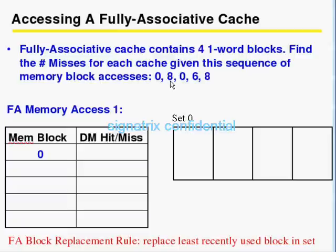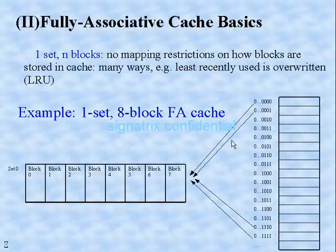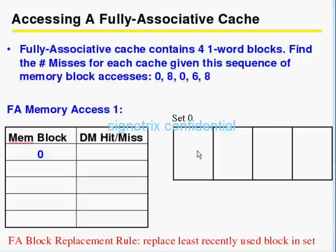Let's start with the first access. You have to remember this diagram. The CPU wants to access location zero, so it takes the data from main memory and puts it in the first block. Second access is eight — it fetches the data and puts it here. Third is zero again.